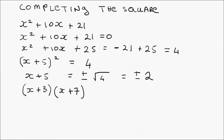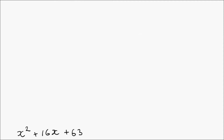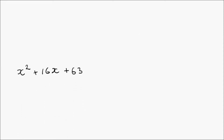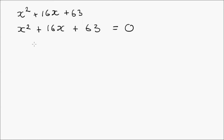We have another quadratic to factor: x squared plus 16x plus 63. Again, we're going to factor this by the method of completing the square. The first thing is to set this equal to zero, giving x squared plus 16x plus 63 equals zero. We bring the constant term across: x squared plus 16x equals minus 63.